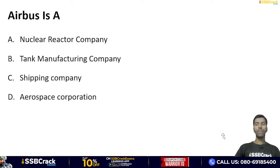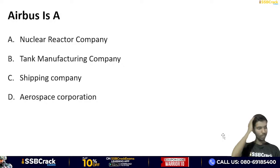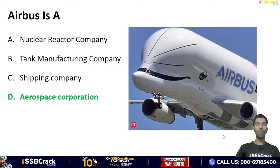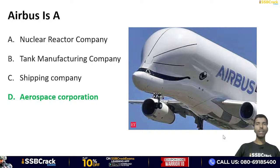Airbus is a — nuclear reactor company, tank manufacturing company, shipping company, ya aerospace corporation? And the right answer is option D — it is an aerospace corporation. Yeh United Kingdom ki company hai jo civil planes banati hai. Duniya mein sirf do companies civil planes banati hain — Boeing (USA) aur Airbus (UK).